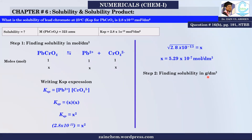Now I have to convert solubility from mol per decimeter cube to gram per decimeter cube. The formula is: solubility in gram per dm³ equals solubility in mol per dm³ multiplied by molecular mass. This is derived from: moles = mass divided by molecular mass, so mass = moles × molecular mass.